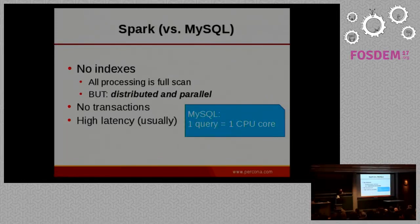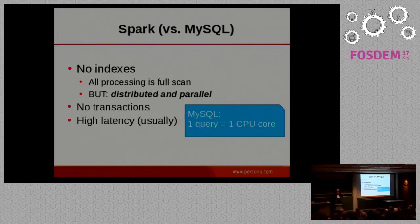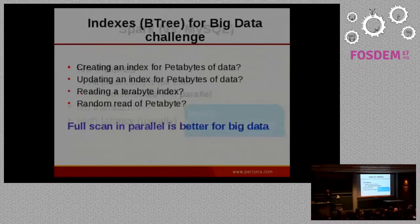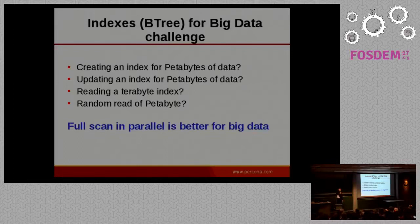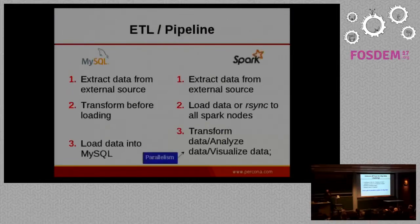This approach leads to higher latency in combining results — after the result set is processed you have to combine it into a single result, and nodes have to communicate. Why doesn't Spark use indexes? Think about what happens if you create an index for a petabyte of data, or update an index, or just read a terabyte-sized index — not fast. A full parallel scan could be much easier.